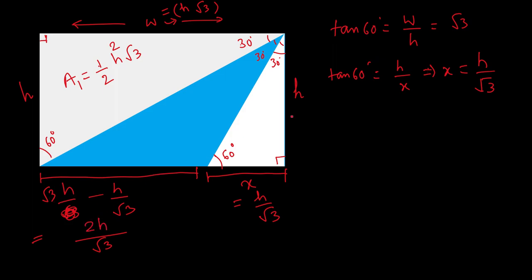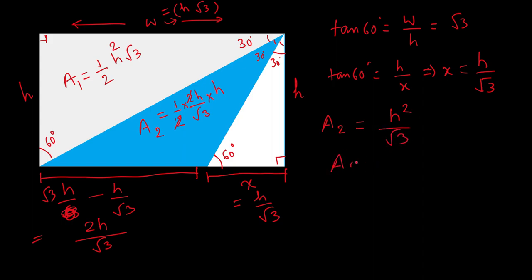So this base length is 2h/√3 and the height is h. The area a2 equals half times base times height: half × (2h/√3) × h. The 2 in the numerator and the 2 from the half cancel, giving us a2 = h²/√3.